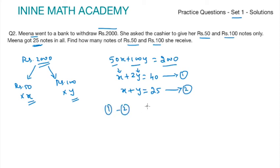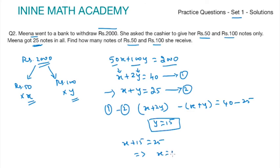Now, equation 1 minus 2 to yield x plus 2y minus x plus y equal to 40 minus 25. That is y equal to 15. Now substitute y equal to 15 in this equation. We get x plus 15 equal to 25. This implies x is equal to 10. Meena got 10 fifty rupee notes and 15 hundred rupee notes. Thus you can write x is equal to 10 and y equal to 15.